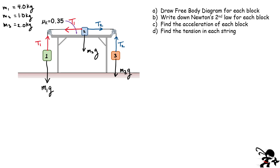Here we're assuming ideal pulleys — they have very small mass compared to the blocks, so we don't consider forces acting on them. We're not interested in the dynamics of the pulleys; we're only interested in the three blocks. There are a couple of other forces we can't forget about: the tabletop is exerting a normal force on this block, pushing up on it with a force we'll call N.